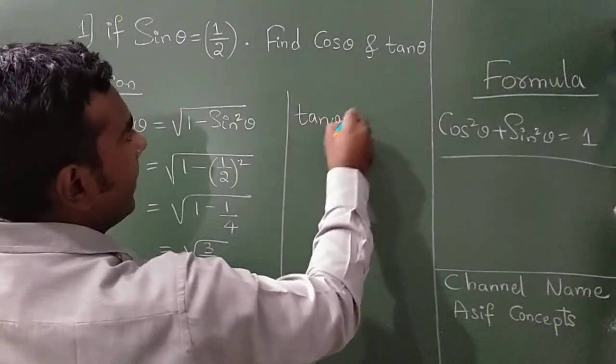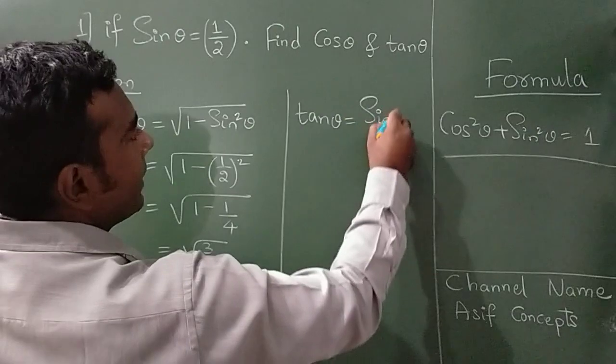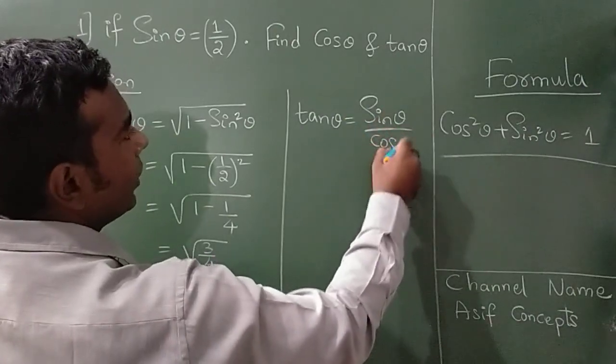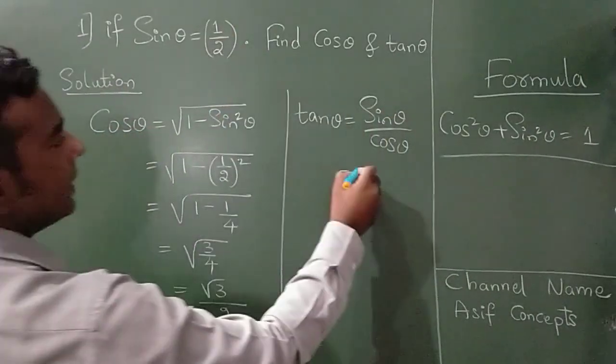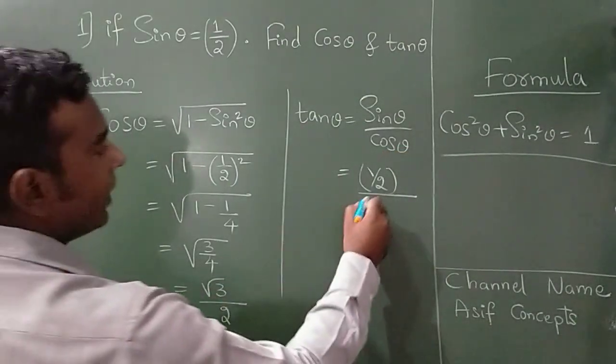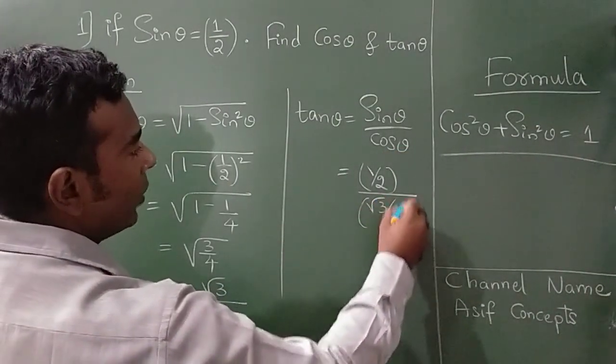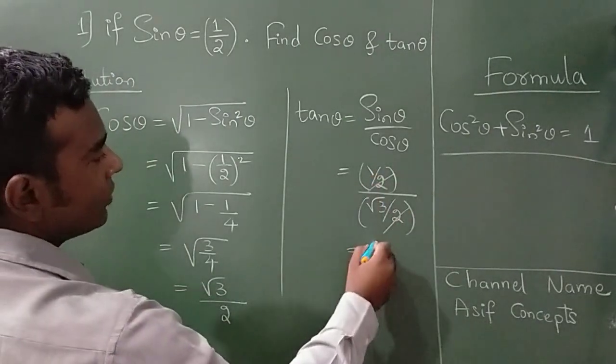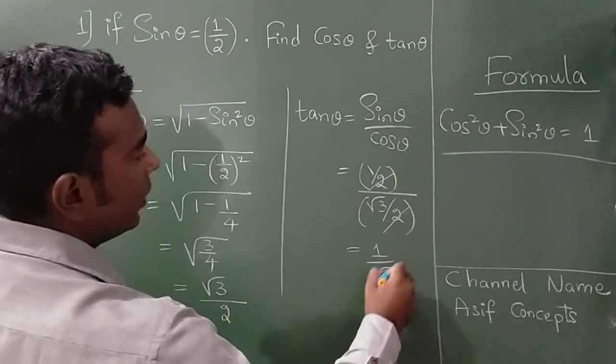Now tan theta, there is a formula sin theta by cos theta. What is sin theta? It is 1 by 2. Cos theta, just now we have got root 3 by 2. So 2 and 2 get cancelled. So final answer is 1 divided by root 3.